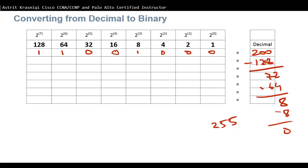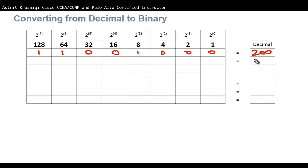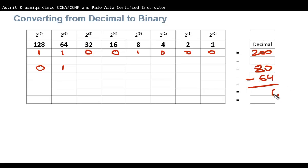Another decimal-to-binary example: 80. The leftmost bit is 128; 128 > 80, so place 0. Next is 64; 64 ≤ 80, place 1, subtract 64 leaving 16. 32 > 16, place 0. 16 = 16, place 1, subtract 16 leaving 0. The rest are all zeros. So 80 = 01010000.